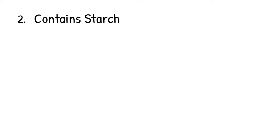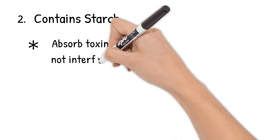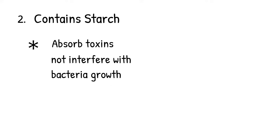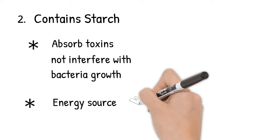Second, Mueller-Hinton agar contains starch. The starch serves two purposes in this media. First, it absorbs toxins released from bacteria as the bacteria grows, so that the toxins will not interfere with bacteria growth and antibiotic diffusion. Second, starch serves as energy source for the bacteria.